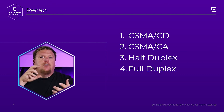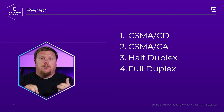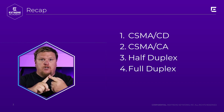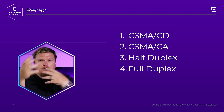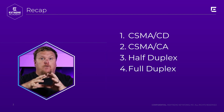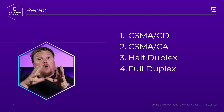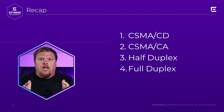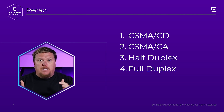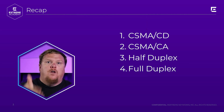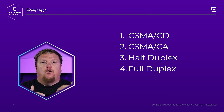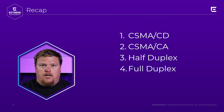As a quick review: carrier sense — listen before you talk. Multiple access — we can talk to multiple people. Collision detection — I hear that you talked at the same time as I did, let's figure that out. Collision avoidance — I can't hear you at the same time as I'm speaking. And then half versus full duplex — half is one and then the other; full duplex is we can both talk at the same time and both fully understand each other.